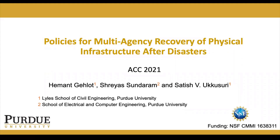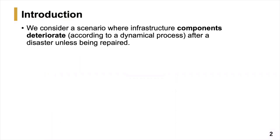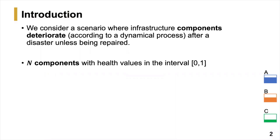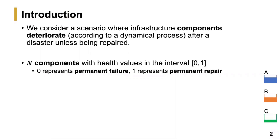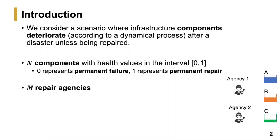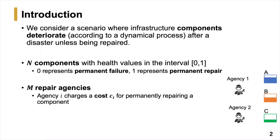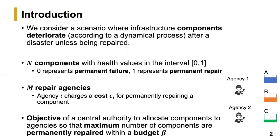Hello, today I'll be talking about policies for multi-agency recovery of physical infrastructure after disasters. We consider a scenario where infrastructure components deteriorate after a disaster unless being repaired. There are N components with health values in the interval 0 to 1, where 0 is permanent failure and 1 is permanent repair. There are M repair agencies, each charging a cost C_AE for permanently repairing a component. The objective of a central authority is to allocate components to agencies to maximize the number of permanently repaired components within a budget B.